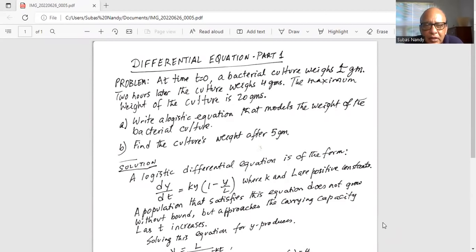The maximum weight of the culture is 20 grams. Write a logistic equation that models the weight of the bacterial culture. That's part A. Part B, find the culture's weight after five hours, not five grams.